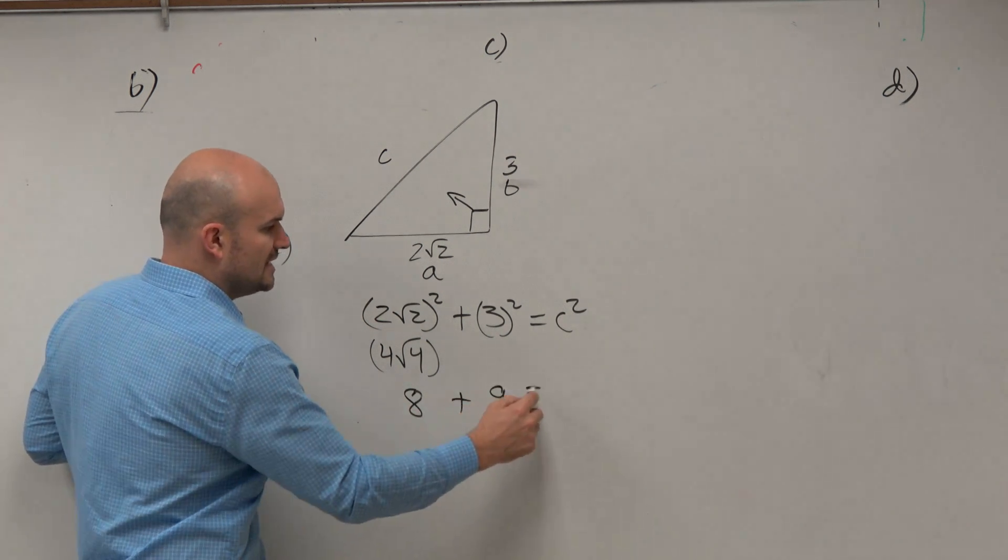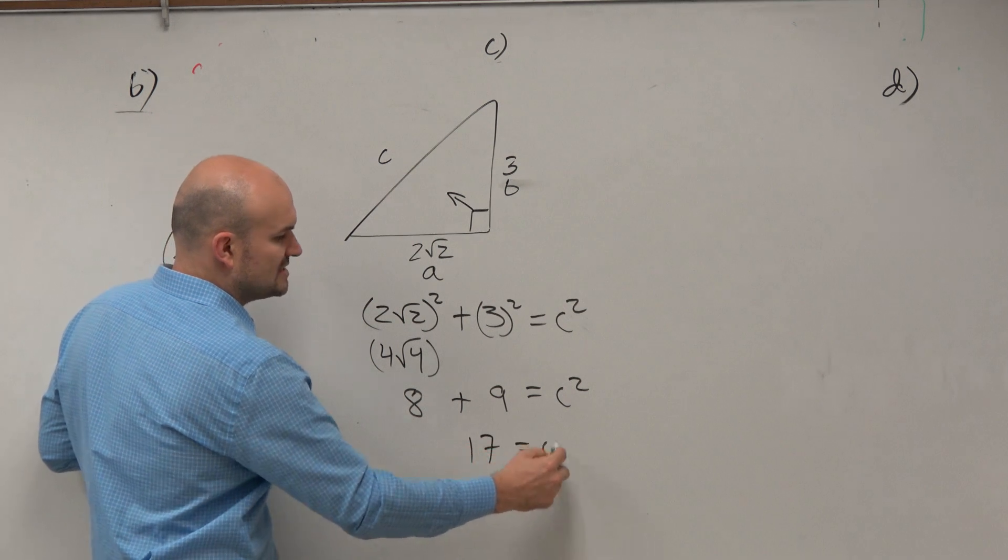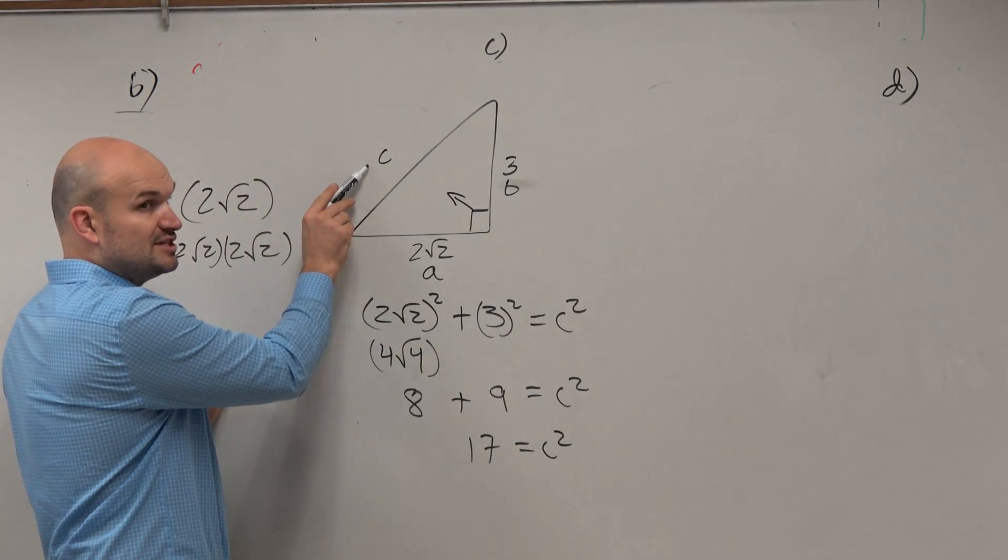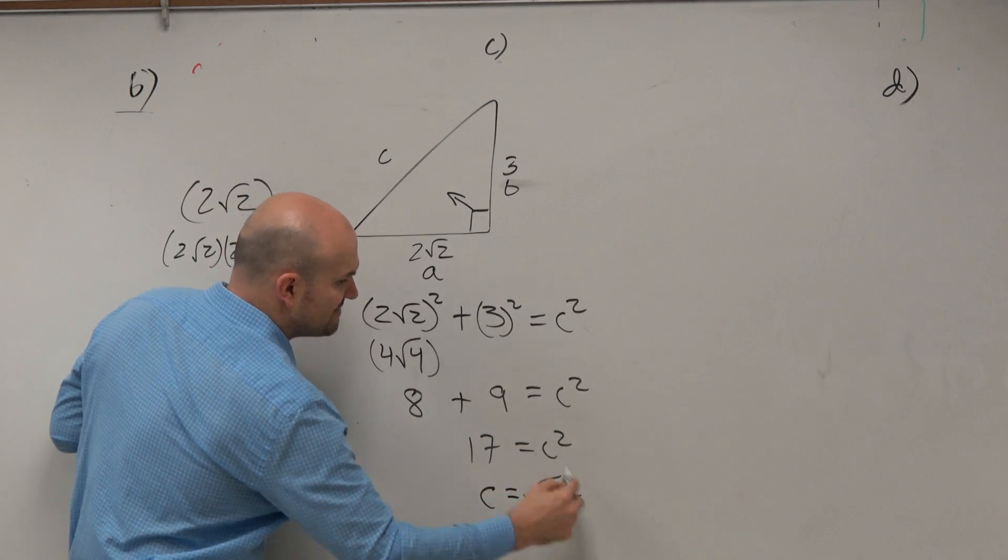Plus 9 equals c squared. 17 equals c squared. But again, we're not solving for c squared. We're solving for c. So c equals the square root of 17.